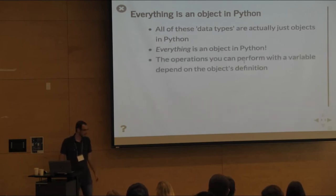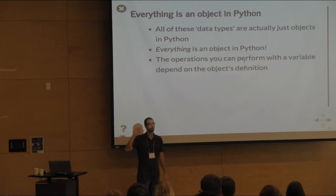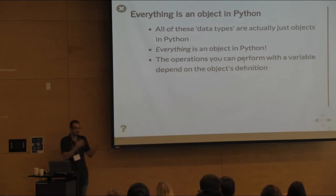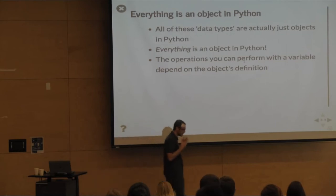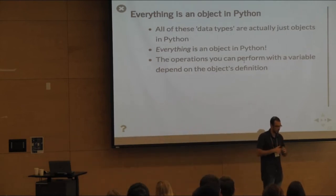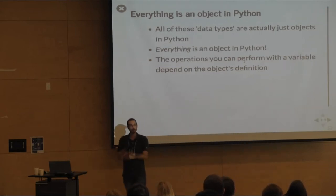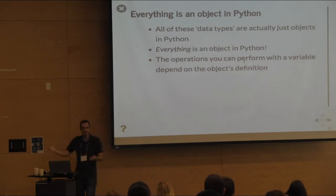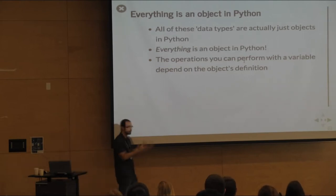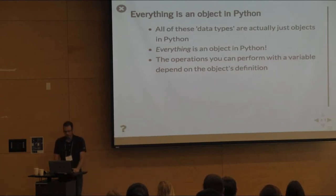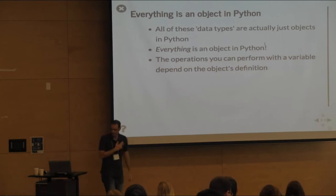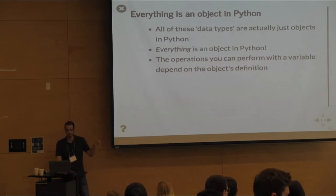An object is a sort of defined thing that has some state and some behavior — think of a rock as an object: its weight is a property, it has a certain state that can change. In Python, everything is an object, including the data types shown here. What you can do with those data types depends on the object's definition.